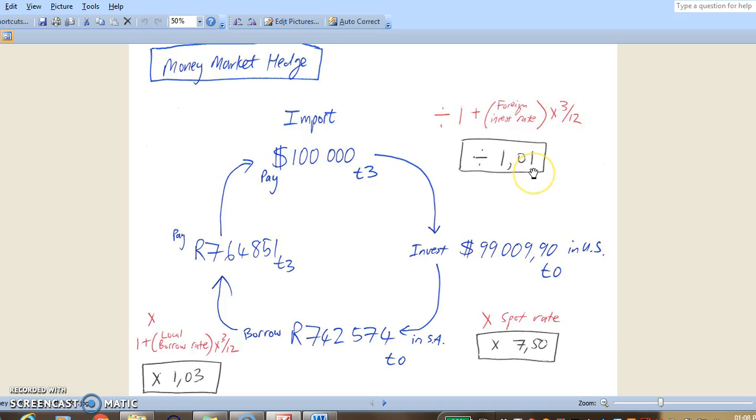So 1 plus 1% is 1.01. So if you divide the $100,000 we require in 3 months time by 1.01, we end up investing $99,009.90 in the US today. Because that will grow to $100,000.